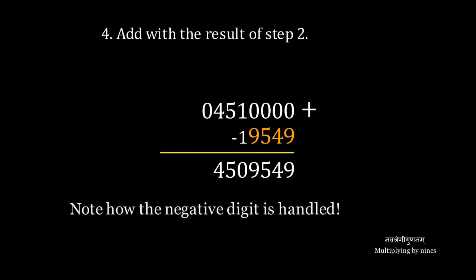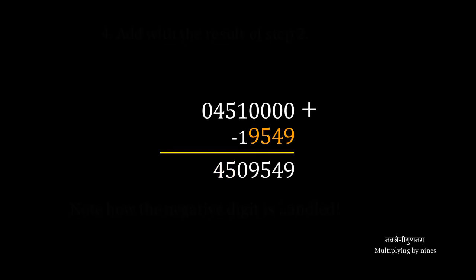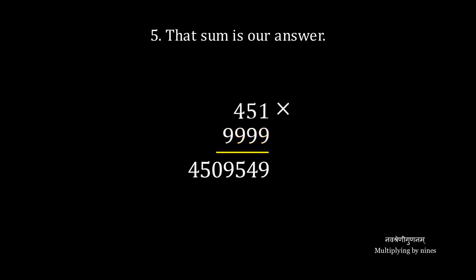We add with the result of step two. Again, as we add digit by digit, we note that the negative one is treated as a standalone negative digit. And that sum is our answer. 451 times 9999 is 4,509,549.